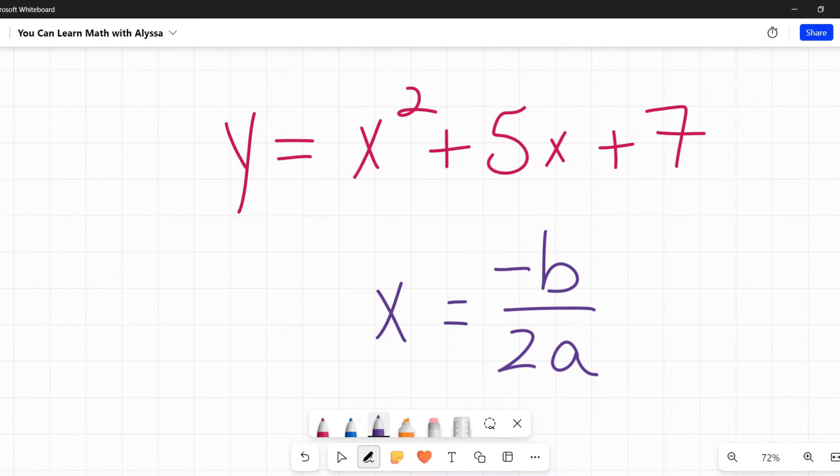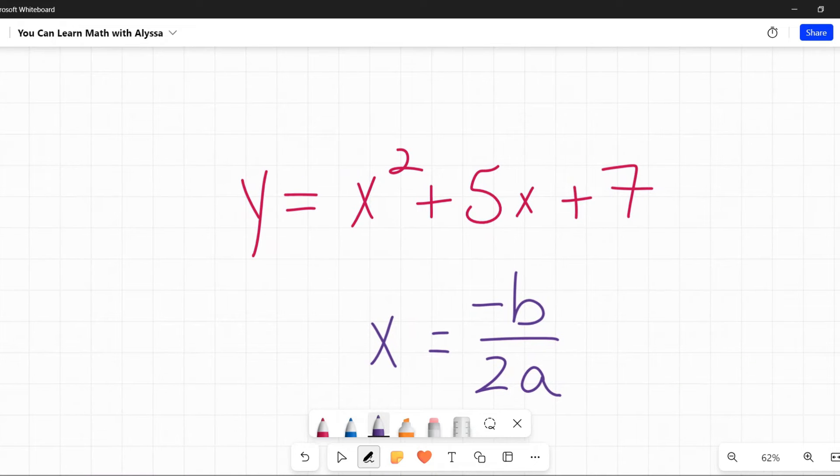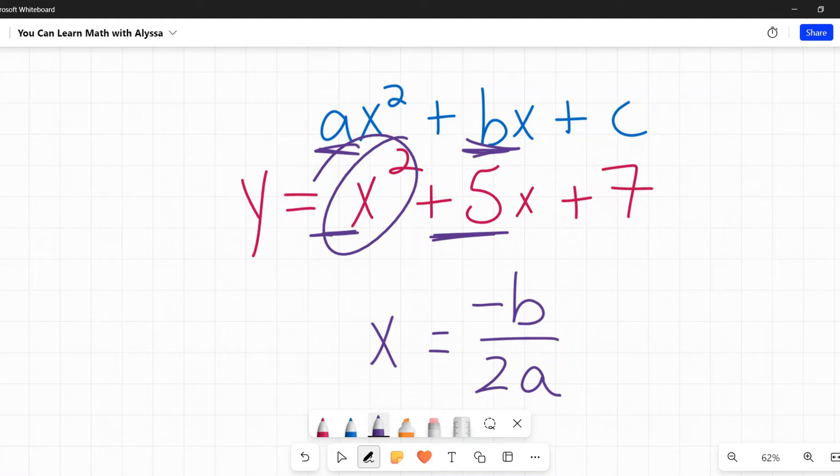The B and the A in this case are referring to our standard form of a quadratic, which looks like this, AX squared plus BX plus C. You may remember this from doing the quadratic formula. So that A is going to correspond to the number in front of X squared. In this case, it is an invisible number 1. The B corresponds to the number by the X in the middle, in this case it's 5. And C corresponds to this last number that's by itself, in this case, 7.